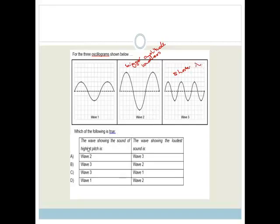Now it says, which one of the following is true? The wave showing the sound of the highest pitch. Now the highest pitch is the wave that's got the highest frequency, which means it's got the shortest wavelength. So therefore we agree that that has to be wave 3. Now it says the wave showing the loudest sound is going to be wave 2. So therefore the correct answer is B. The bigger the amplitude, the louder. The higher the frequency, the higher the pitch.